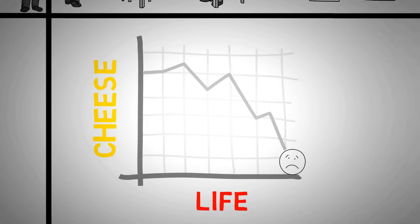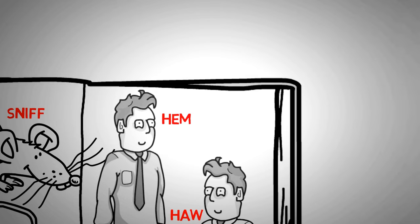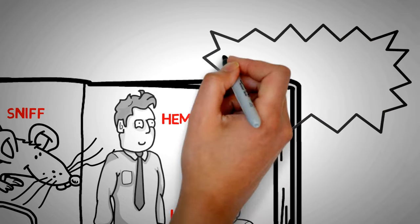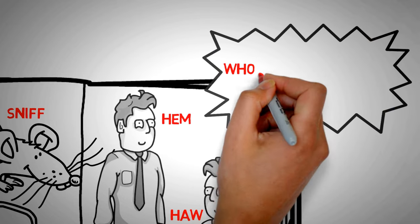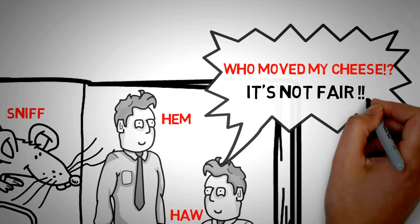The situation had changed, so they decided to change. They sniffed and scurried in search of new cheese. Hem and Haw had not been paying attention to the changes - they took it for granted and were unprepared. How could this have happened, they thought? Nobody warned them. They wanted to believe somebody moved their cheese and didn't want to believe they had failed to notice it getting smaller every day.